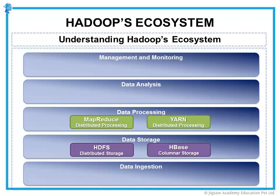We also have MapReduce 2.0, or YARN as they call it, which stands for Yet Another Resource Negotiator. Hadoop's original version of MapReduce supported a rudimentary job and task tracking system. But as the mix of work supported by Hadoop changed, the scheduler could not keep up and this did not support the needs of many enterprises. So a new capability was designed to address these shortcomings that offers more flexibility, efficiency, and performance.